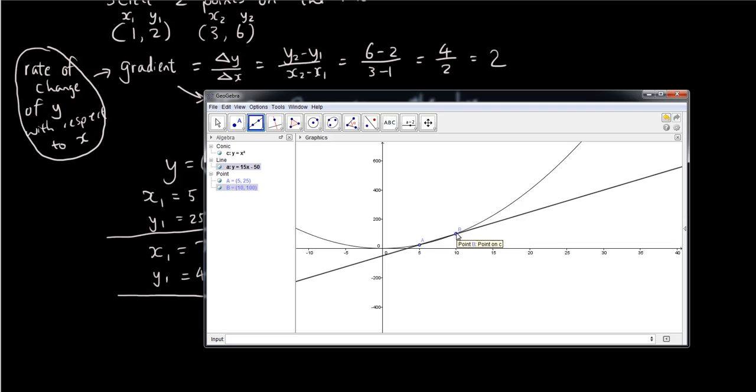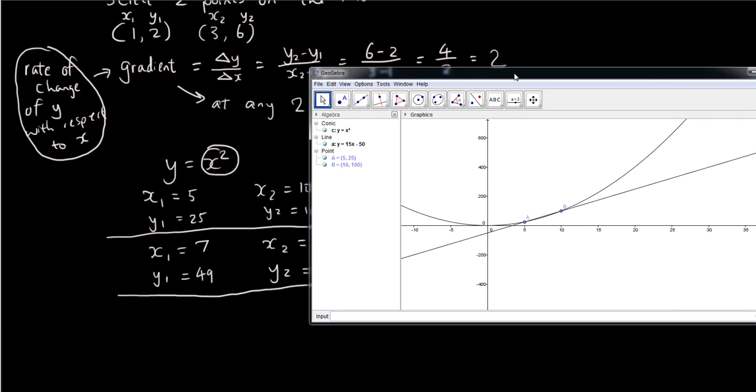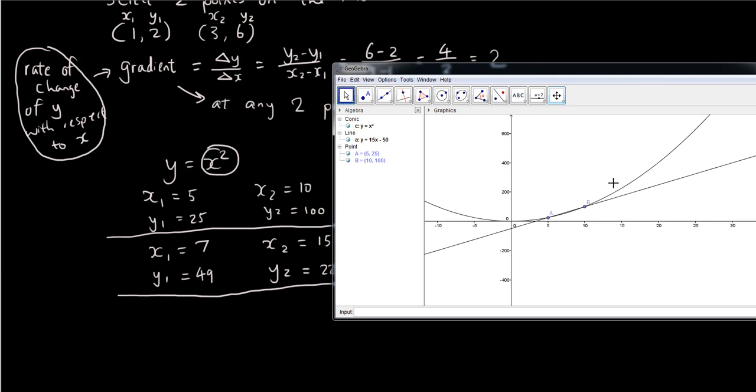For example, if I drag point A to 7, I'm just going to make it approximately 7, and I drag point B to 15 for x. So obviously the line has just changed in slope. The slope of the line from point A to point B is different.